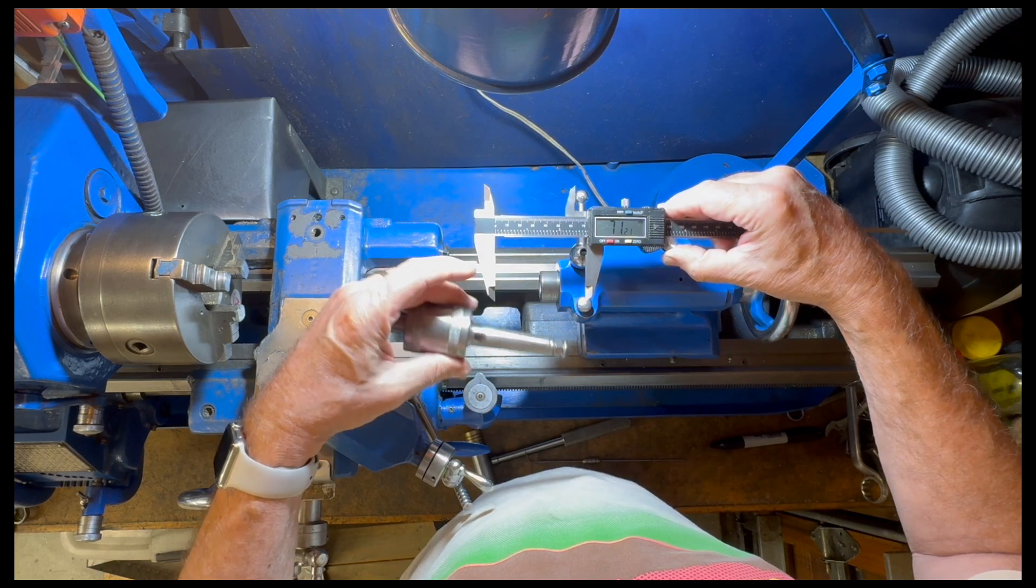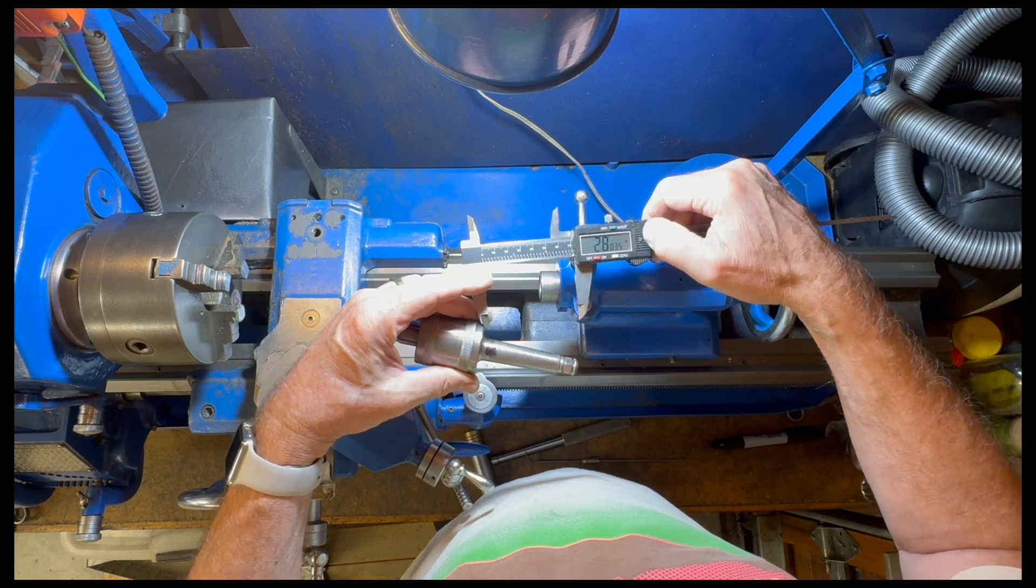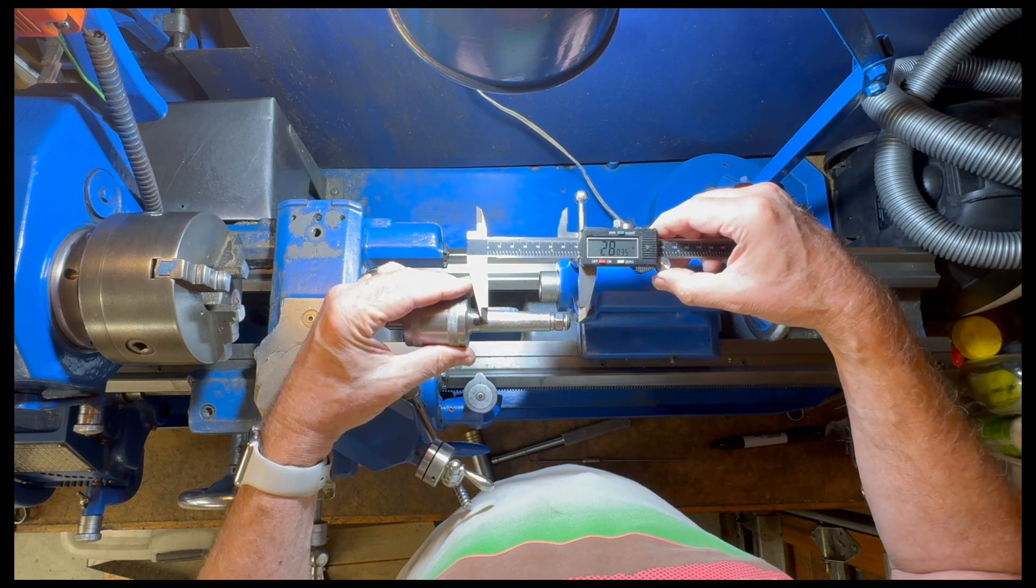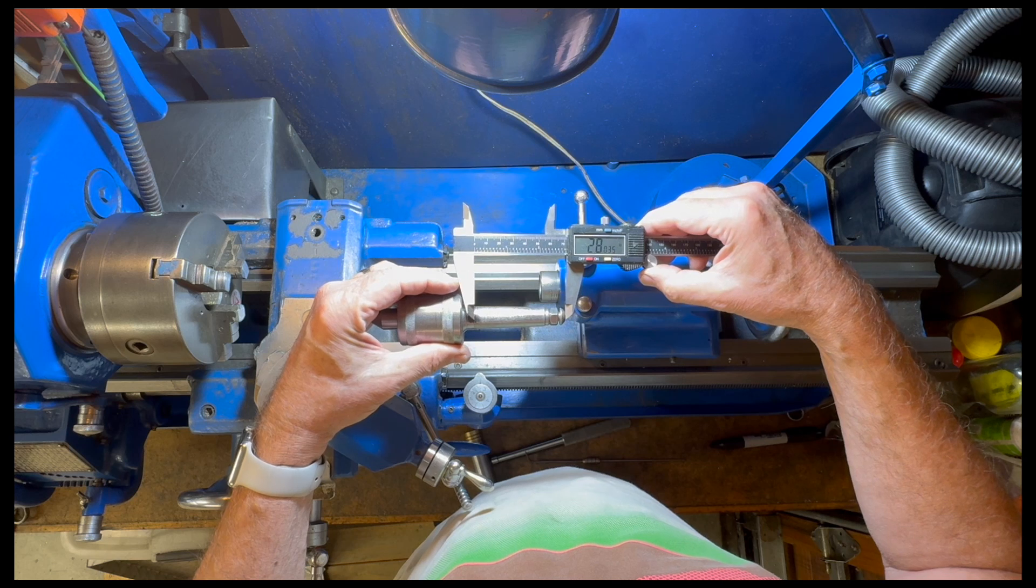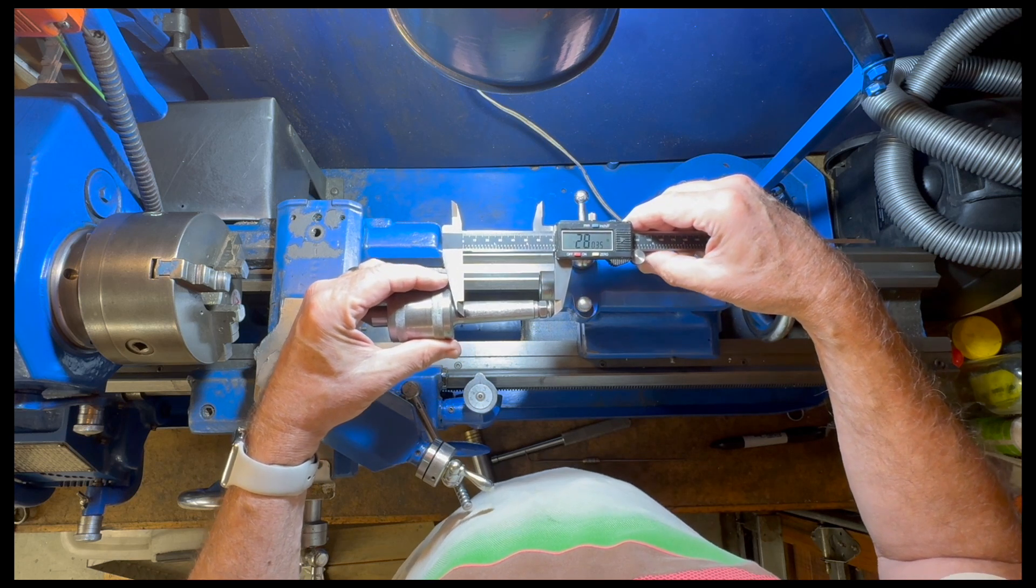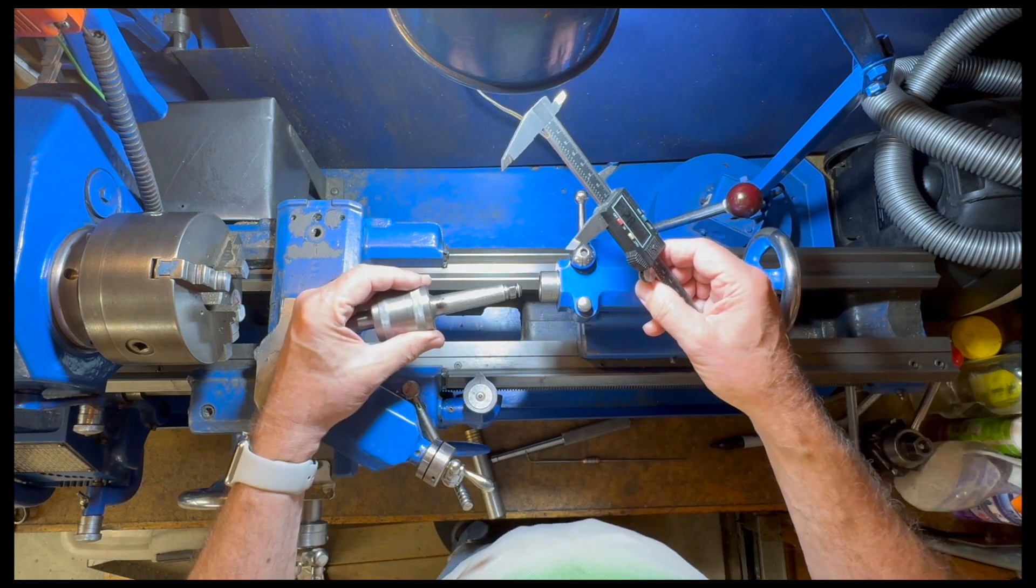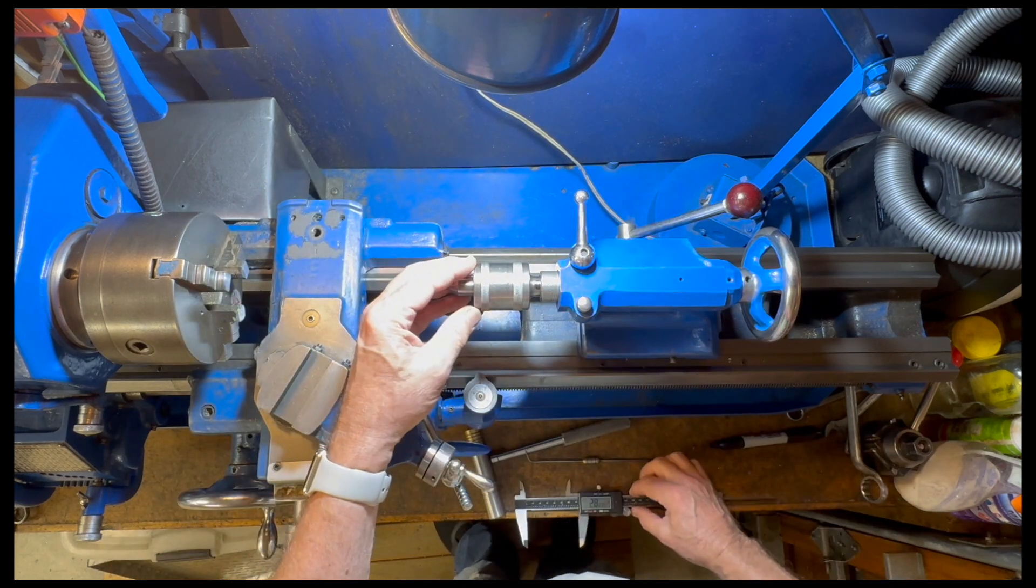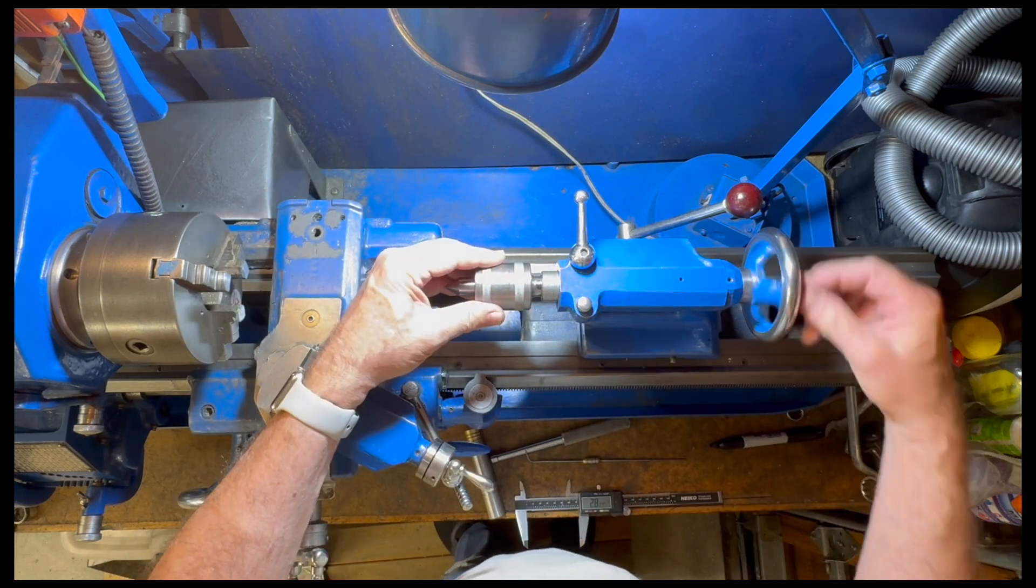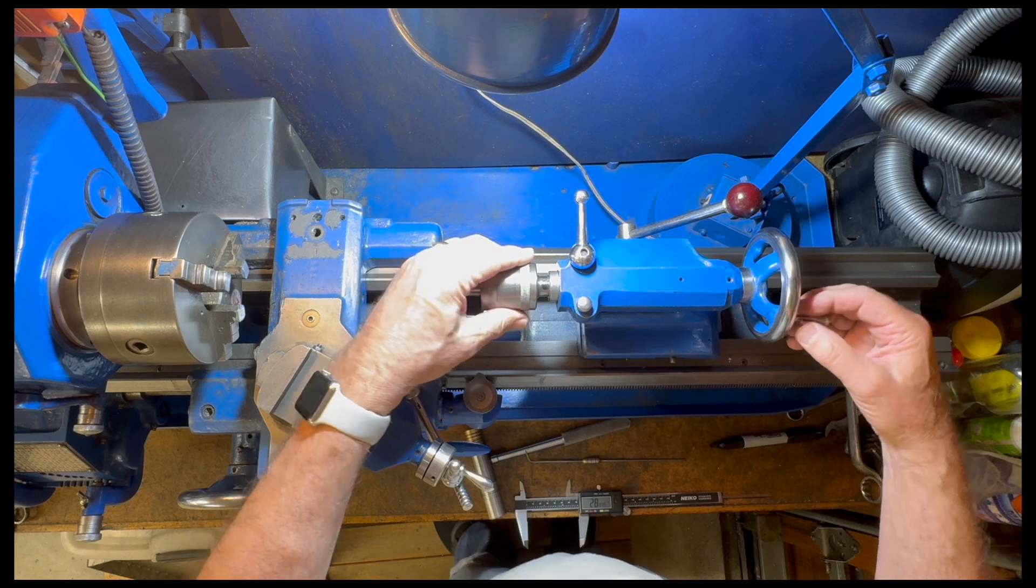71.22 millimeters, near enough to 2.8 inches. Actually, the inch measurement is probably appropriate since this is an imperial machine. So that's how long we need our Jacobs chuck to be in order to pop out right on the zero mark.